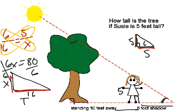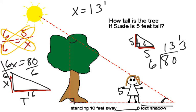And we would get X equals, and 80 divided by 6 is actually going to be 13 and 1 third. So the tree is 13 and 1 third feet tall.